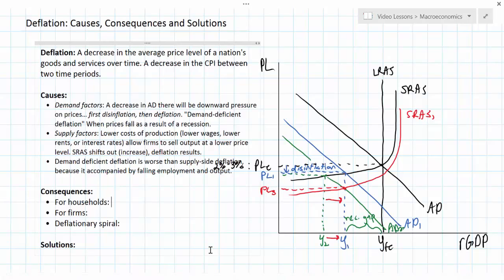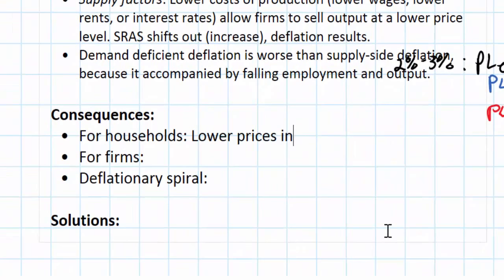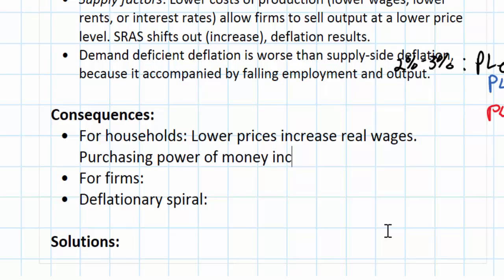On one hand, lower prices increase real wages. People whose wages are fixed—for example, who have contracts or are on pensions that are not adjusted for inflation—will actually see the purchasing power of money increase as prices fall.